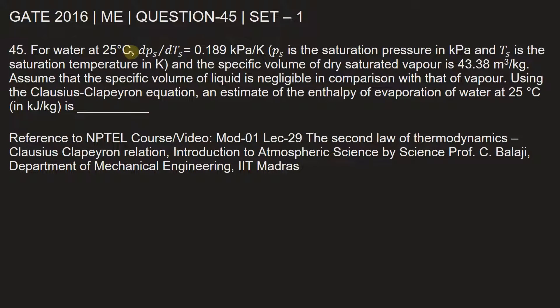For water at 25 degree Celsius, the change of saturation pressure with respect to saturation temperature is 0.189 kilopascal per Kelvin, and the specific volume of dry saturated vapor is 43.38 meter cube per kilogram. Assume that the specific volume of liquid is negligible in comparison with that of vapor. Using the Clausius-Clapeyron equation, an estimate of the enthalpy of evaporation of water at 25 degree Celsius.